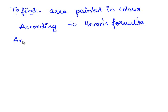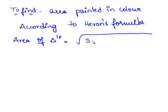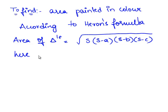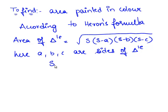The area of the triangle is equal to the square root of S times (S minus A) times (S minus B) times (S minus C), where A, B, C are the sides of the triangle, and S is equal to the semi-perimeter, which is (A plus B plus C) divided by 2.